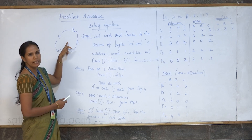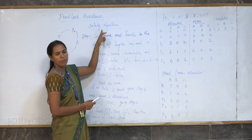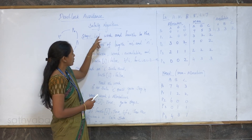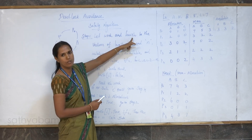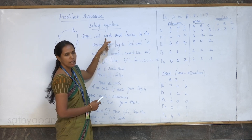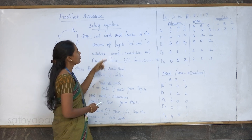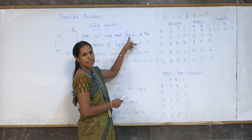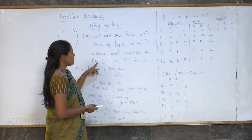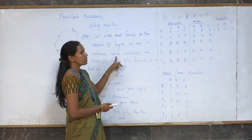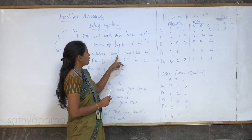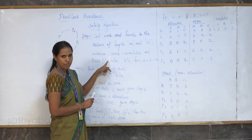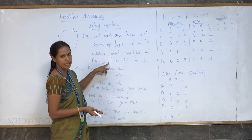We have to avoid the deadlock situation with the support of the Banker's algorithm, also called the safety algorithm. In step number one, we have to take two vectors: one is called Work and another is Finish. Work is the number of available resources present in the system, and Finish is the status of each process — whether it is finished or not. Work is initialized to available resources, and Finish of i is set to false at the beginning because the process has not yet started.